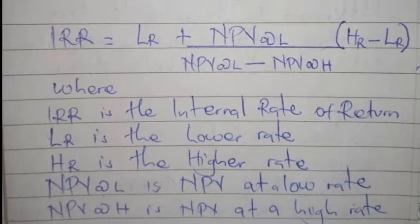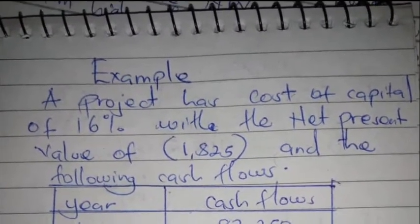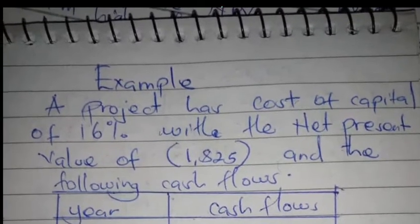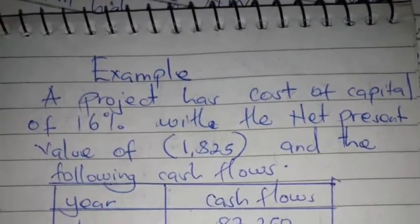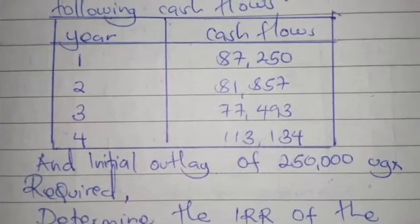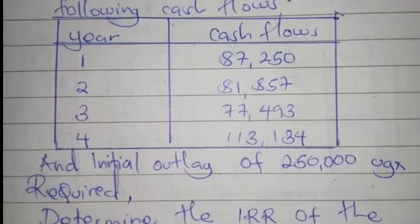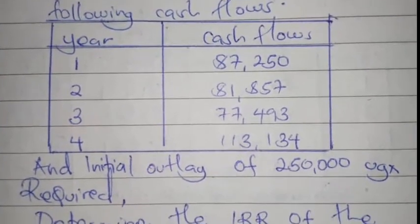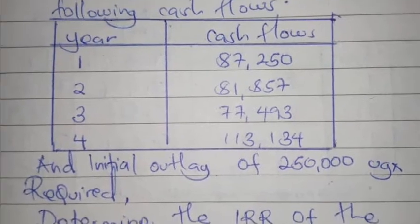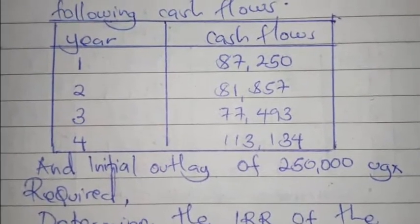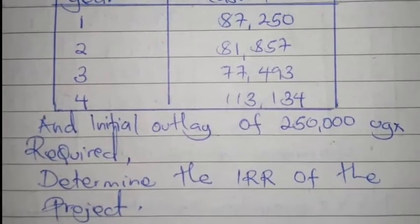The example: a project has a cost of capital of 16% with a net present value of negative $1,825. The cash flows are: Year 1 — $87,250; Year 2 — $81,857; Year 3 — $77,493; Year 4 — $113,134. The initial outlay is $250,000. We are required to determine the IRR of the project.